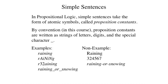In propositional logic, simple sentences take the form of atomic symbols called proposition constants. By convention, we write proposition constants as strings of letters, digits, and occurrences of the underscore character.